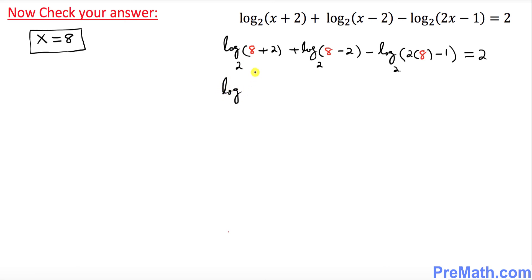So log of 8 plus 2 becomes 10 with a base 2 plus log of 8 take away 2 is 6 with a base 2 minus log with a base 2. 2 times 8 is 16 take away 1 is 15 equals to 2.